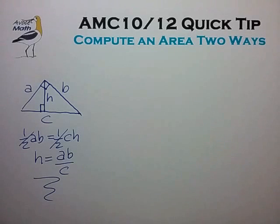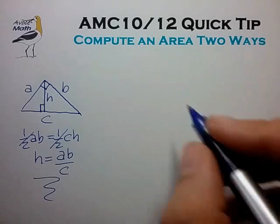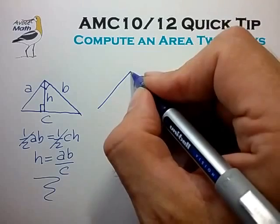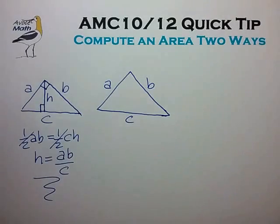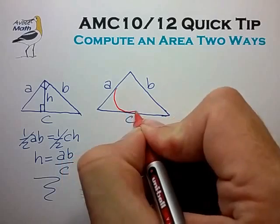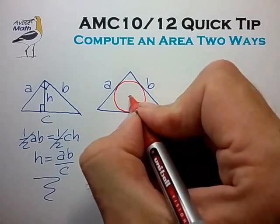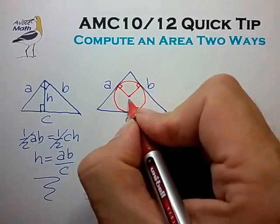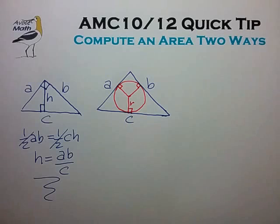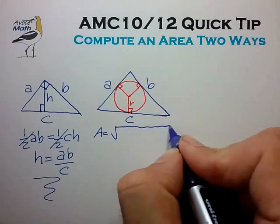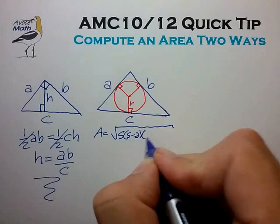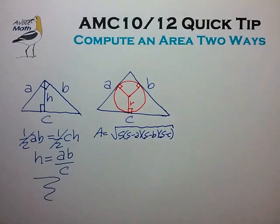In the second example, let's look at finding the radius of an inscribed circle inside an arbitrary triangle. Let's draw our arbitrary triangle with sides A, B, and C, draw in the inscribed circle, and draw the radii to the sides. We can calculate the radius using the same technique of computing the area in two ways. One way is to use Heron's formula: the square root of S times S minus A, S minus B, S minus C. Hopefully you've seen that formula.